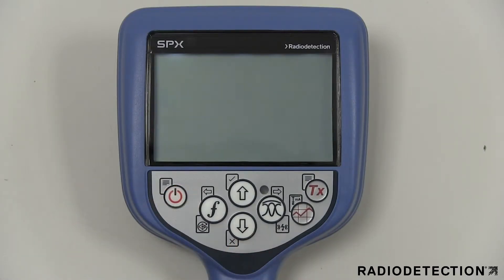There are 16 menu options available on the precision locator range that all follow the same format. The VOL menu option allows you to adjust the speaker volume from zero mute to three loudest.